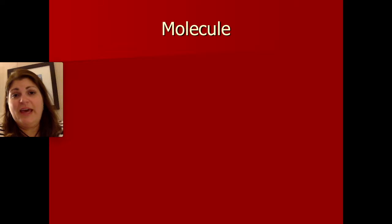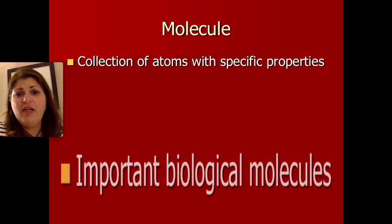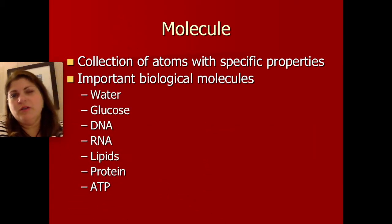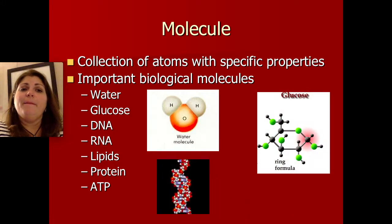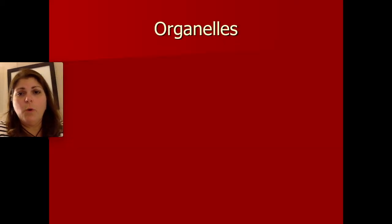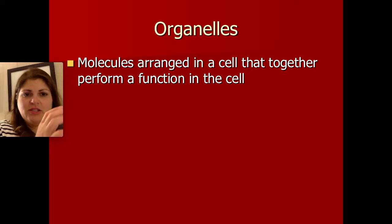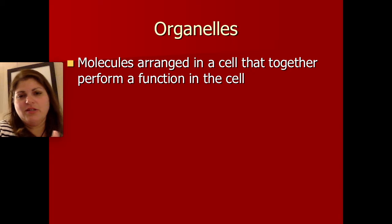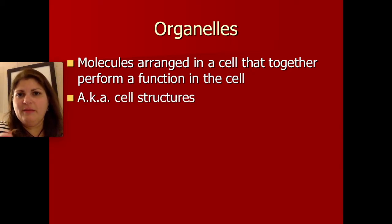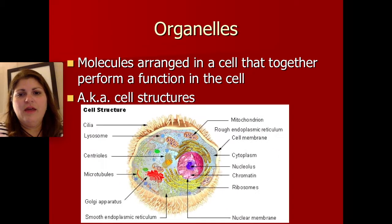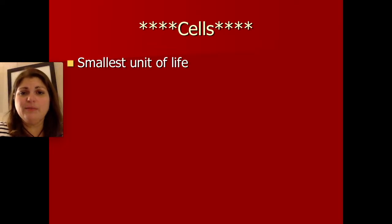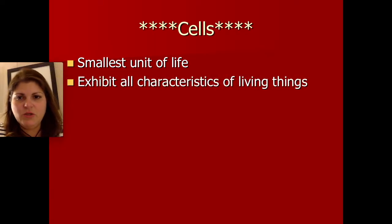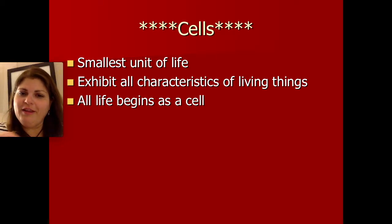Atoms are arranged into molecules when bonded together. Some important biological molecules include water, glucose (a form of sugar), DNA, RNA (its cousin), lipids (fats), proteins, and ATP — an energy molecule our cells use. Molecules are arranged into structures known as organelles, which literally means little organs. They're molecules arranged together to perform a function, kind of like organs in our bodies — another way of looking at them is as teeny tiny cell structures. Together, organelles make up cells, which is the smallest unit of life, can do all characteristics of life, and all life begins as a cell.